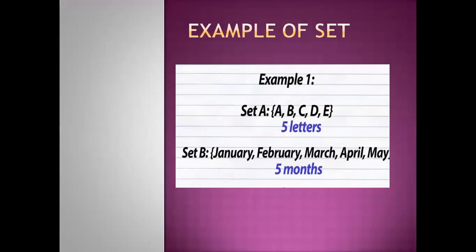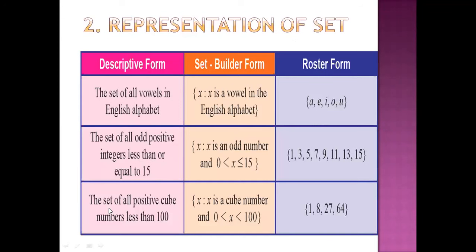For example, we can see there are two examples: set A and set B. In set A, what is there? A, B, C, D, and E — the first five letters of the alphabetical series. And in set B: January, February, March, April, and May — the first five months. How to represent a set?